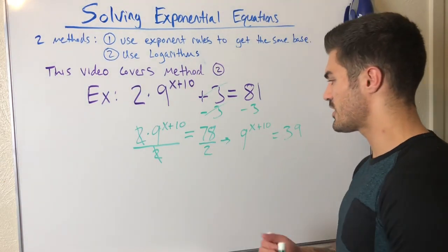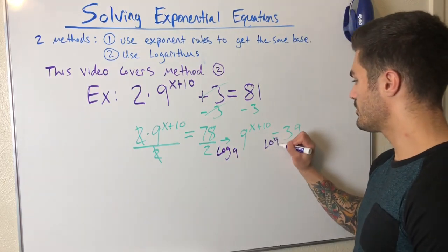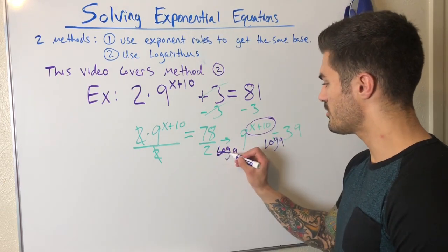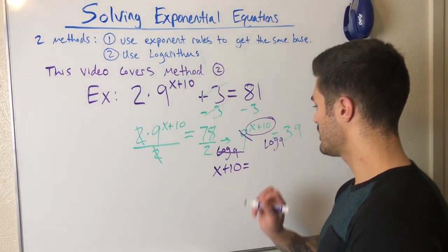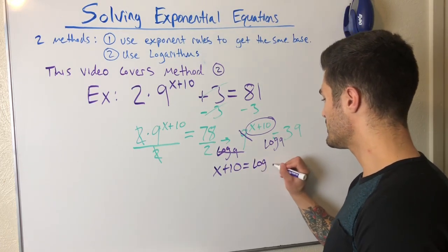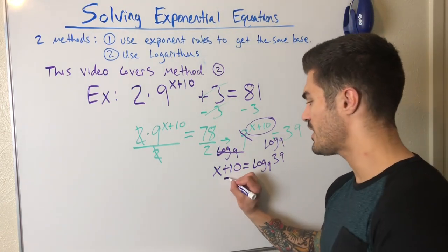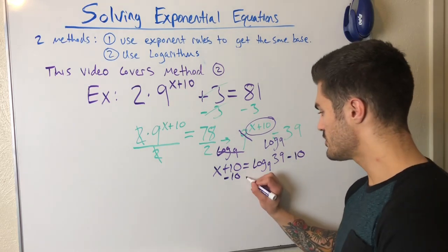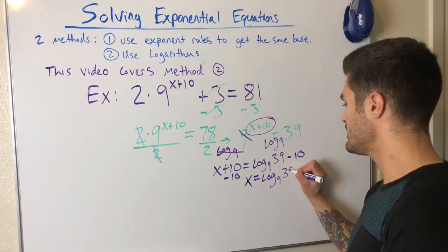Now I take log base 9 of both sides. Log base 9 of 9 cancels, leaving X plus 10 equals log base 9 of 39. I subtract 10 from both sides to get the final solution: X equals log base 9 of 39 minus 10.